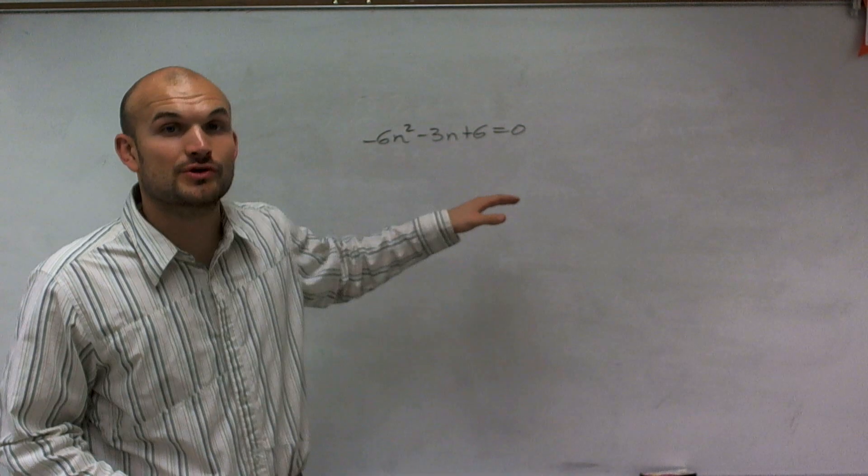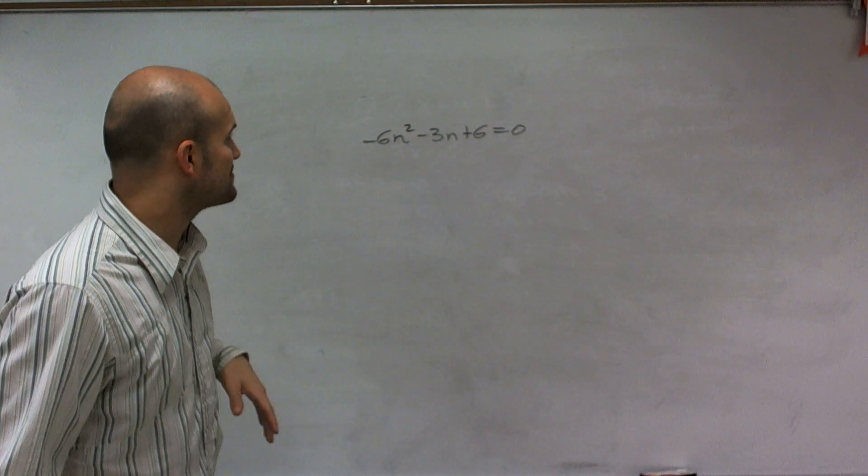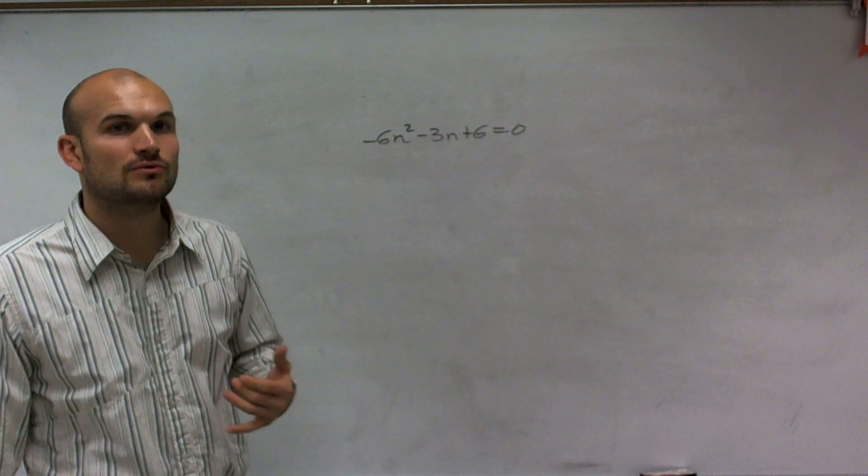Welcome. What I want to do is show you how to find the discriminant of this equation. In the equation, we have -6n² - 3n + 6 = 0.